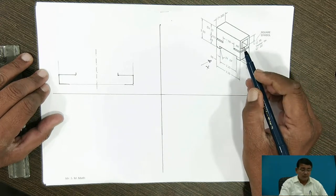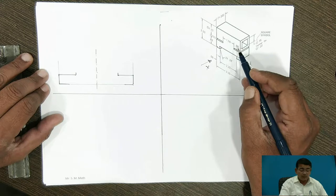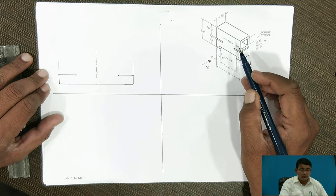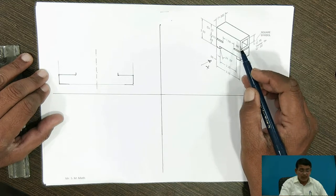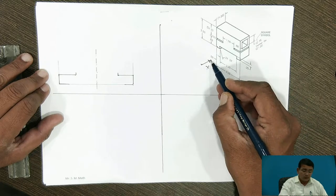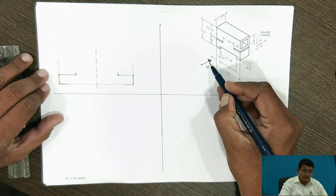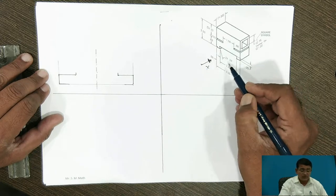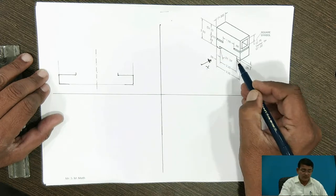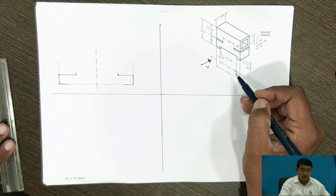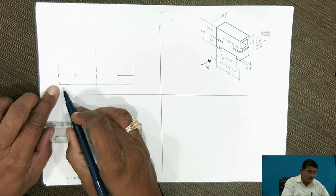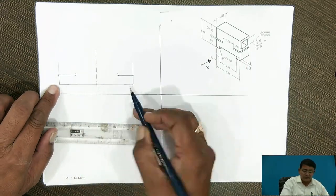The second important thing: any line or plane which is parallel to you, you have to draw it as it is — the true shape and true length must be shown. So when you draw the front view in the direction of X, you have to calculate the maximum dimensions: 3.25. I am drawing the 3.25 here.